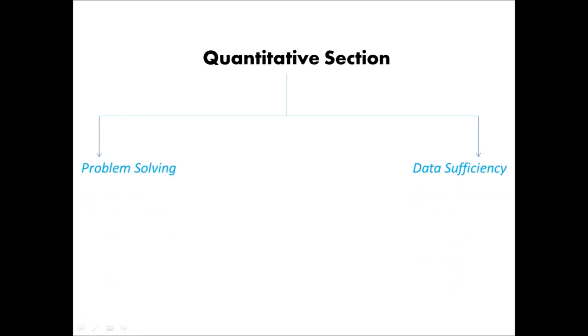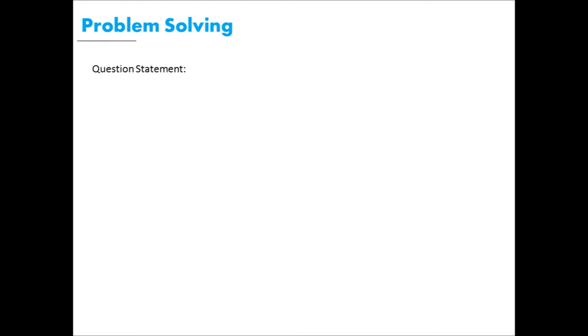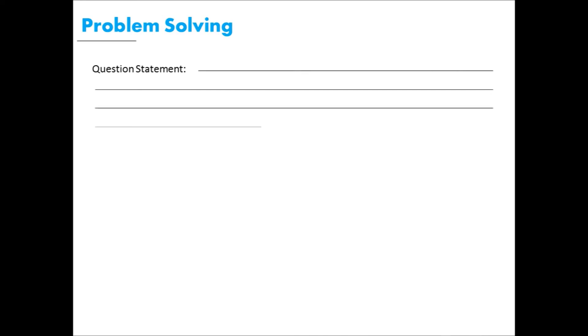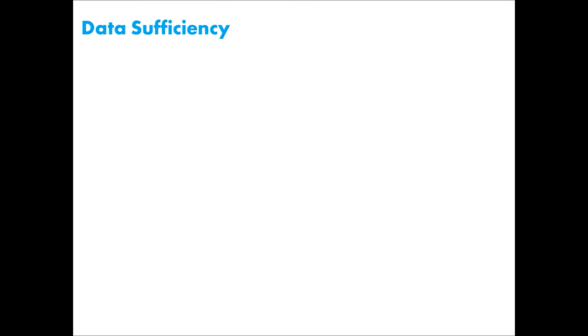The quantitative section comprises two types of questions. First is Problem Solving, and the second is Data Sufficiency. Problem Solving questions are standardized multiple choice questions. You'll get a question statement followed by five answer choices, out of which one is correct — you mark it and move ahead.